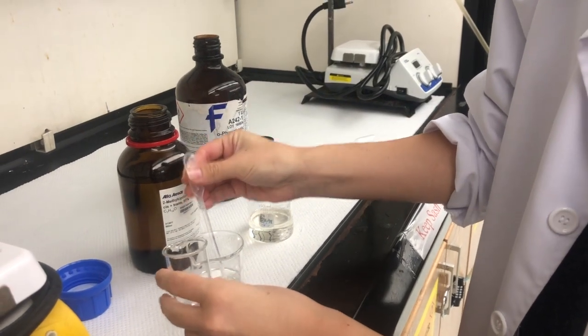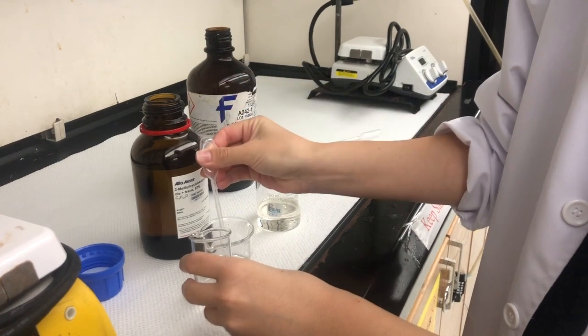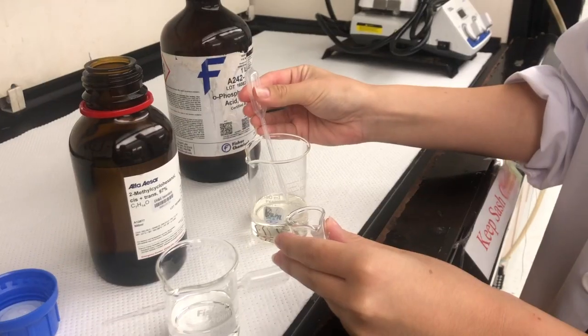Begin by gathering your necessary solutions. You will need 3 mL of 2-methylcyclohexanol as well as 1 mL of 85% phosphoric acid.